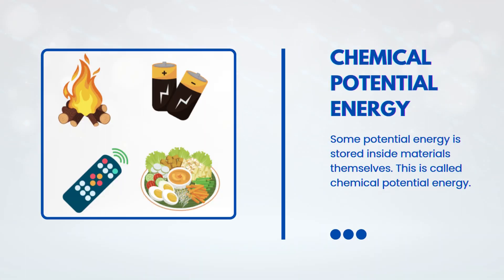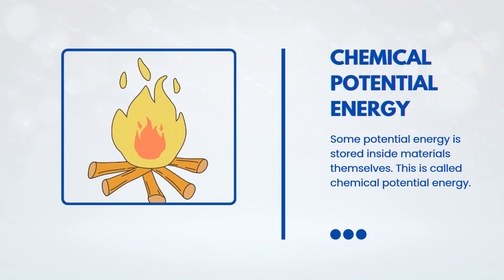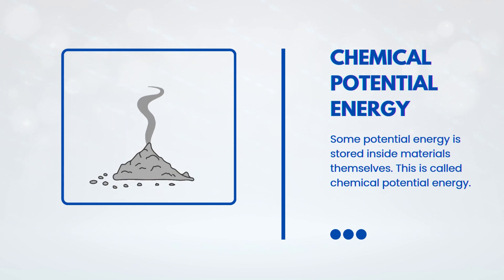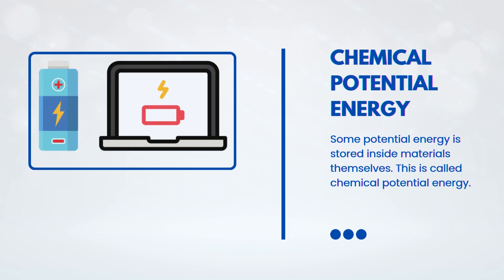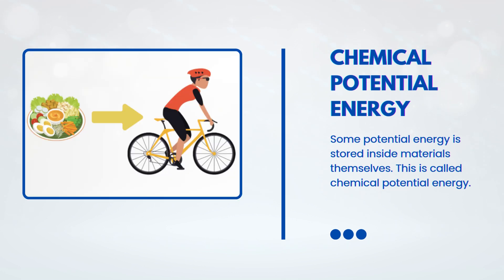Wood in a campfire, batteries in a remote control, and the food you eat all contain this kind of energy. The wood stores energy in its bonds until it burns and releases heat and light. Batteries store energy until they power a device. Food stores energy your body uses to move and grow.